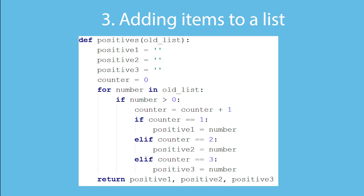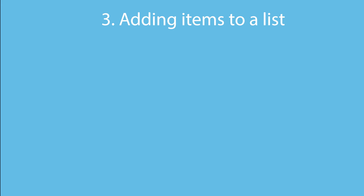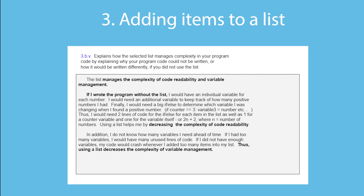This gets a lot worse if I add more items. So the list manages the complexity of code readability again. But there's another problem: I don't know how many variables I need ahead of time. If I have too few variables the code would crash; if I have too many, I'd have a lot of unused code and variables. So the list also helps manage the complexity of variable management. My 3b5 answer talks about how the code is less readable due to all the if-else statements, and also the difficulty of not knowing how many variables are needed ahead of time and the consequences of having too many or not enough.